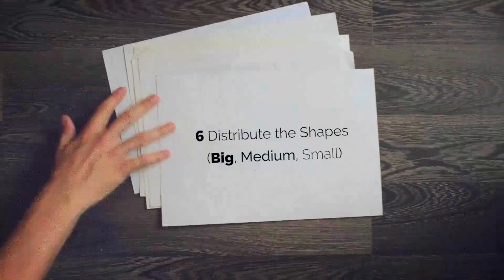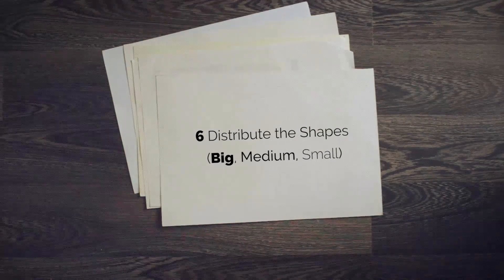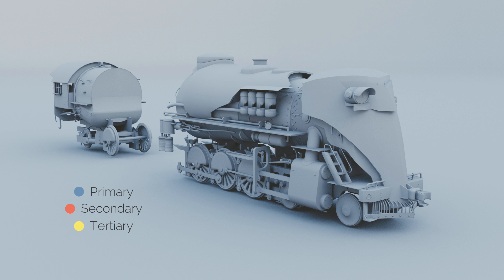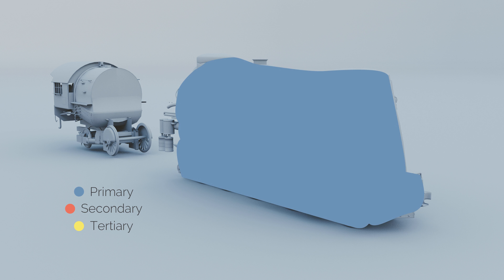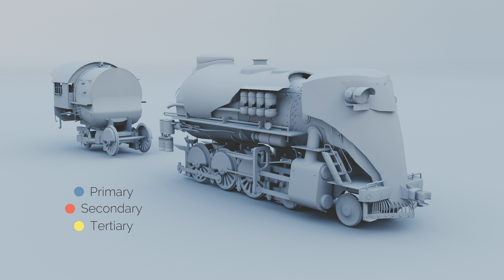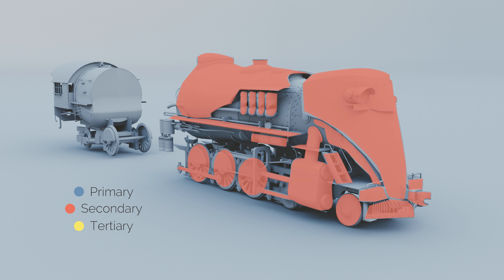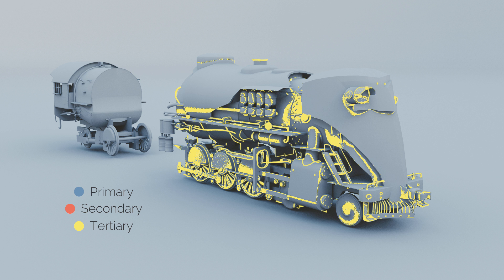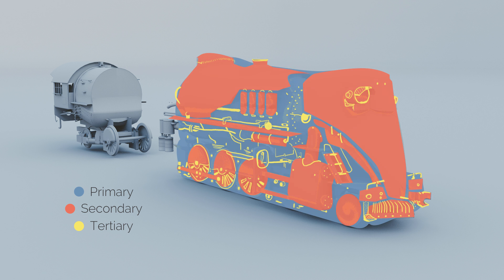When you're satisfied with the result, it's time to distribute the shapes. Nell Blevins, in his amazing tutorial on shape distribution, said that if your image has a nice distribution of big, medium, and small shapes, the resulting image will tend to be more pleasing to the eye. First you read the biggest shape — in the case of my train it's a cylinder. Then you notice the secondary details, distributed not uniformly but in some meaningful way, with areas of no details and areas of very dense details. When we combine all levels of detail, we get a very appealing result.